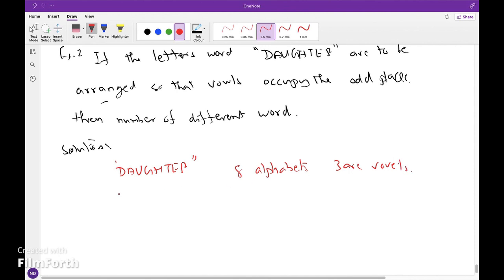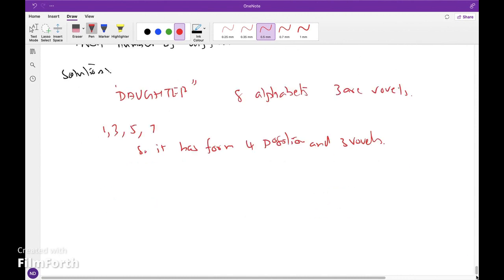These vowels can occupy the odd positions, that is first place, or third place, or fifth place, or seventh place. So there are four positions and three vowels. The arrangement can be done in 4P3 different ways.